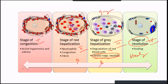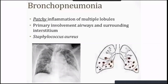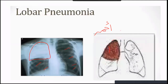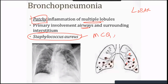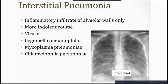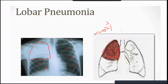Pattern three is interstitial pneumonia. Inflammatory infiltrate of the alveolar walls — the interstitial tissue beside the alveoli becomes inflamed. This is a more indolent course; the patient is not that ill. Usual causes are viruses, Legionella pneumophila, Mycoplasma, and Chlamydia. These cause atypical pneumonia — the treatment is different from typical pneumonia. They will ask this in the exam many times: what causes interstitial or atypical pneumonia? We call it walking pneumonia because the patient can still walk.